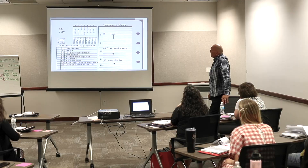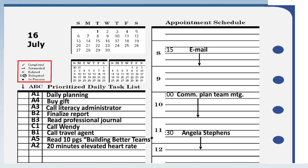Once you get in that mode you do the prioritizing very quickly. Now, at the top of the page we have symbols — let's cover what each stands for. We've just completed our daily planning, so we put a check in the box. A check means we've taken care of it. I do my 20 minutes of elevated heart rate right after I've done my plan, so I get a check in the box for A2.